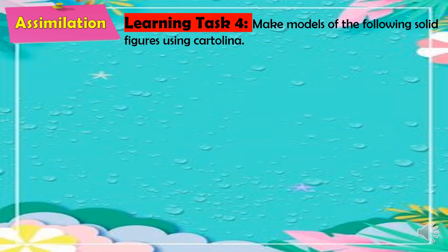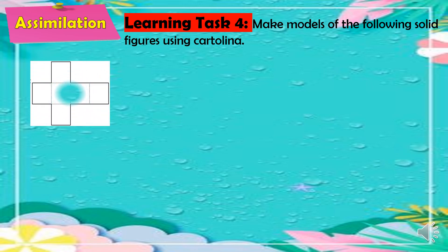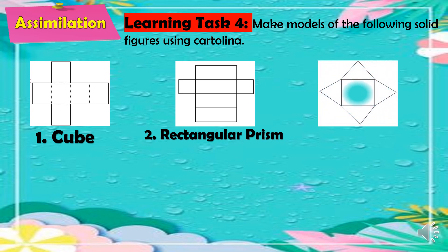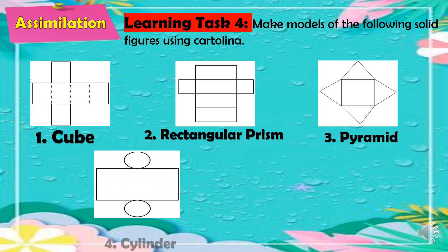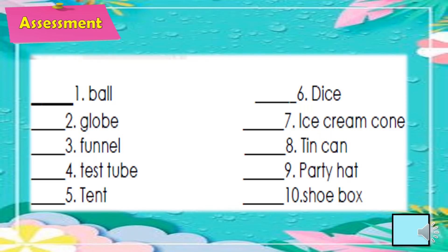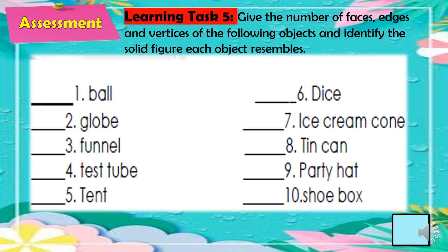For learning task 4, make models of the following solid figures using cartolina: a cube, a rectangular prism, a pyramid, a cylinder, and a cone. For the assessment, learning task 5, give the number of faces, edges, and vertices of the following objects and identify the solid figure each object resembles.